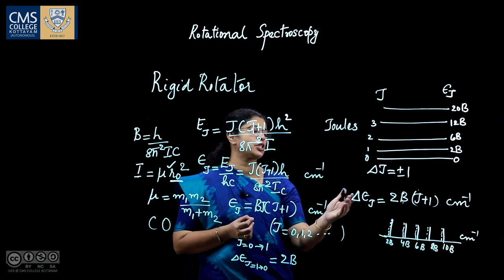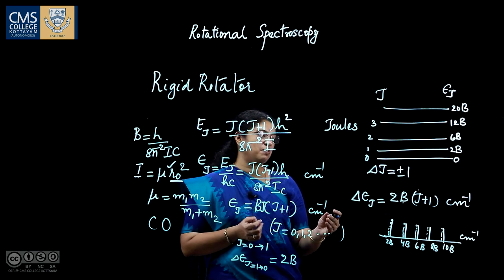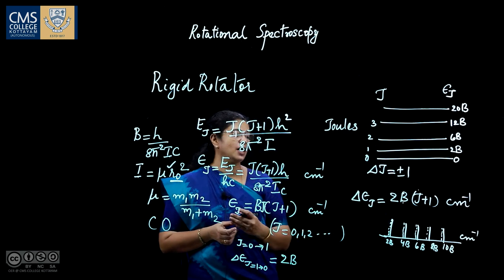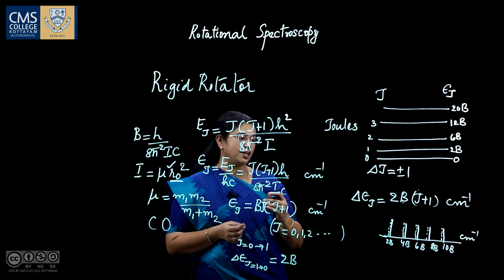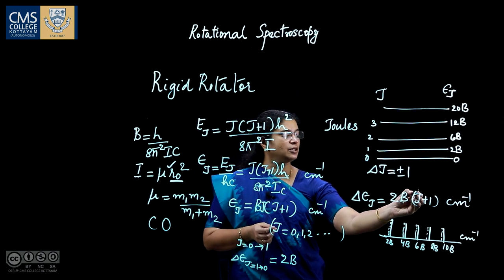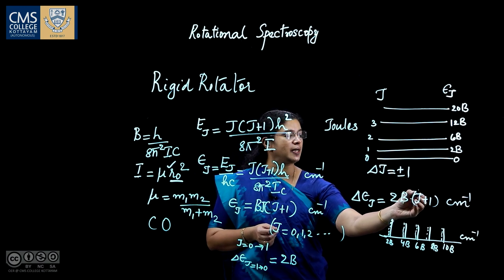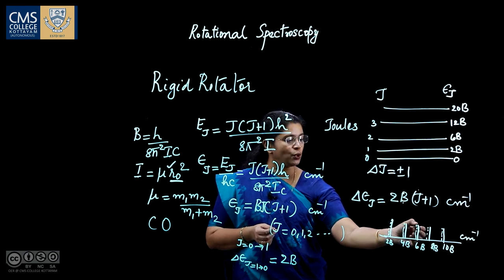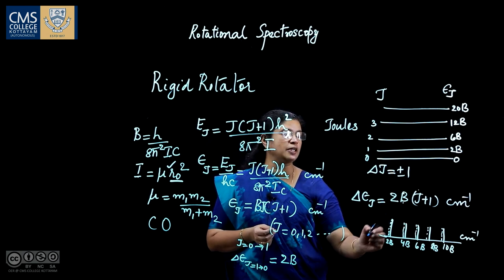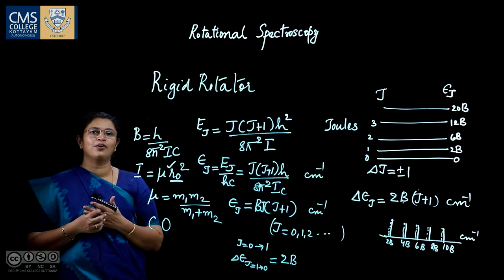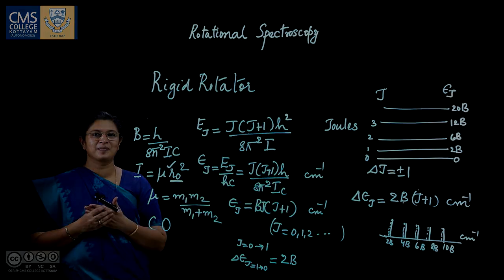In conclusion, rotational spectroscopy is an effective tool to identify the bond strength, bond length, rotational quantum number J, rotational constant B, and the abundance of isotopes present. That is all for our discussion today. Thank you.